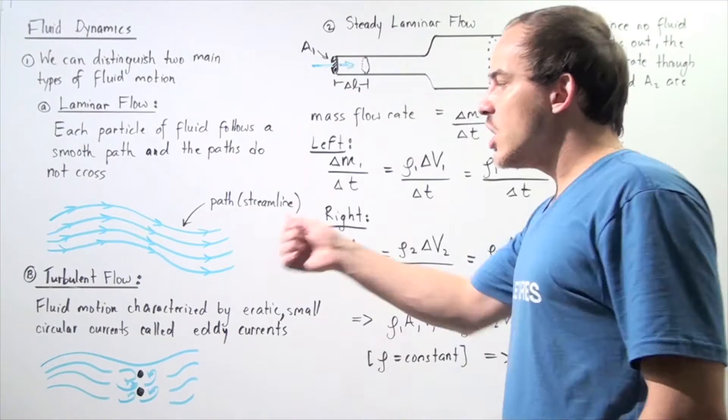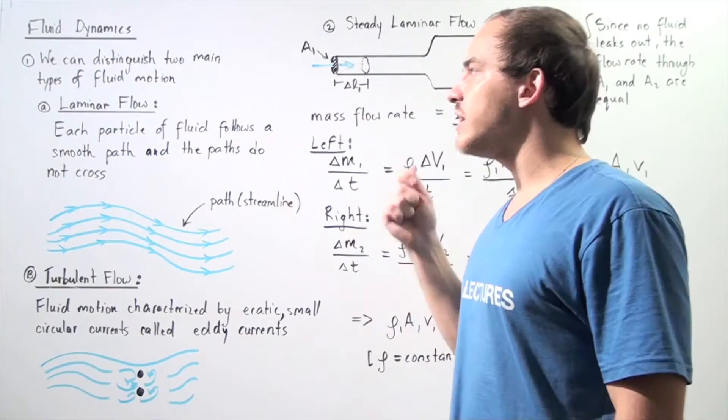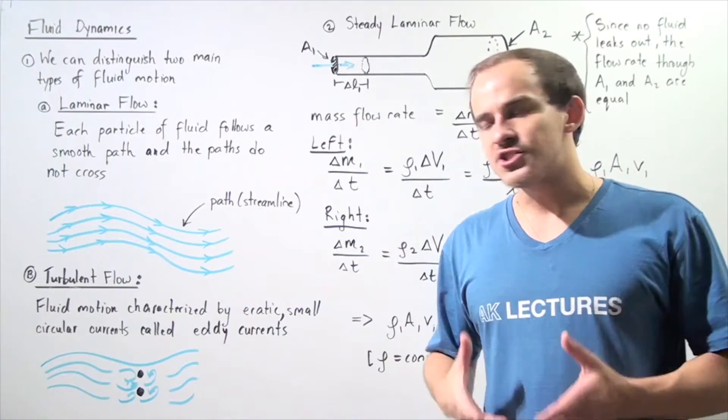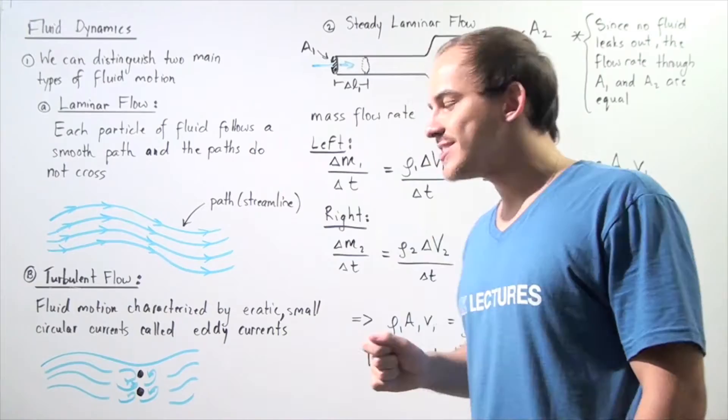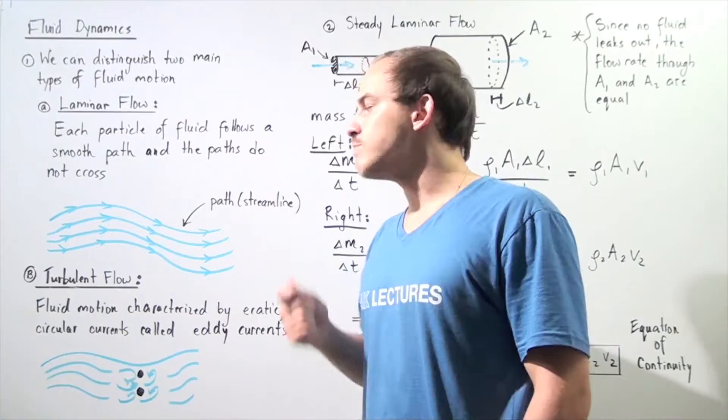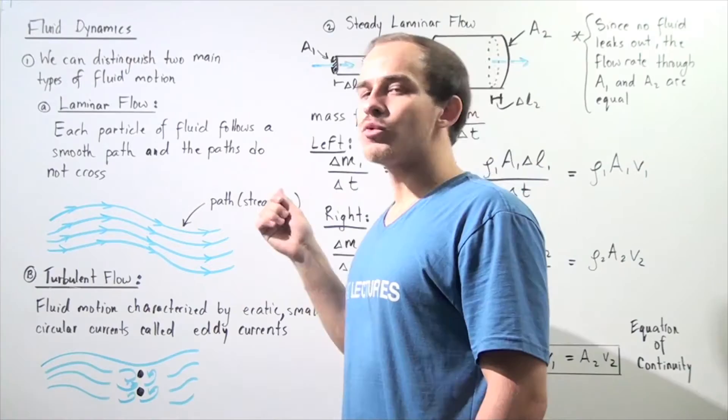Turbulent flow is essentially the opposite of laminar flow and involves a lot more resistance. That's because turbulent flow is characterized by erratic small circular currents called eddy currents, also known as eddies, as shown in the following diagram. These eddies create a lot more resistance compared to laminar flow.